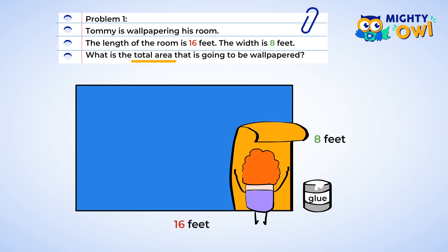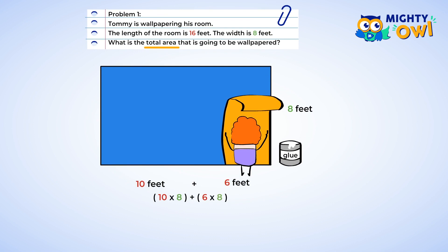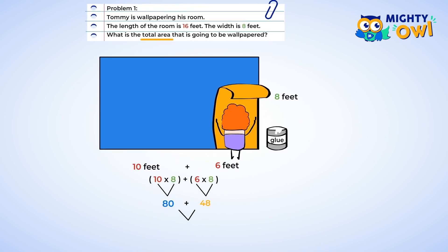We can see that these are pretty big numbers to multiply. We probably know our 8 times table, but maybe not our 16s. So let's break the 16 into smaller numbers — personally, I like working with 10, so let's go for 10 and 6. That gives us the multiplication equations of 10 multiplied by 8 and 6 multiplied by 8. 10 multiplied by 8 is 80, and 6 multiplied by 8 is 48. Now we just add those together — 80 plus 48 is 128. The area of the room is 128 square feet.